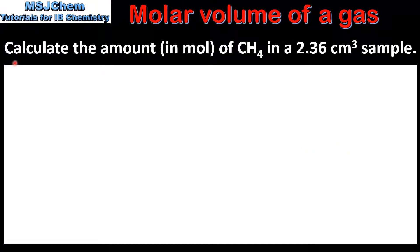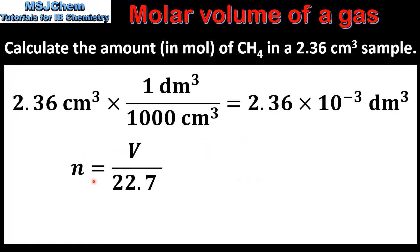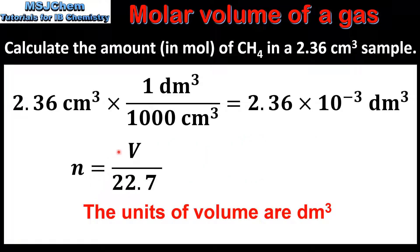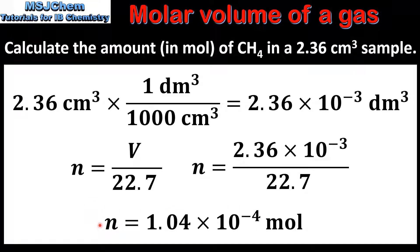In the next example we'll calculate the amount in moles of CH₄, which is methane, in a 2.36 centimetre cubed sample at STP. The first step is to convert the volume from centimetres cubed to decimetres cubed. So 2.36 centimetres cubed is equal to 2.36 × 10⁻³ decimetres cubed. We then use the equation N equals V divided by 22.7, giving us an amount of methane of 1.04 × 10⁻⁴ moles.